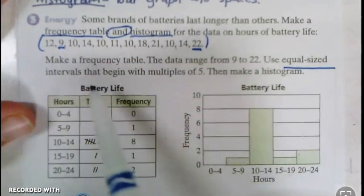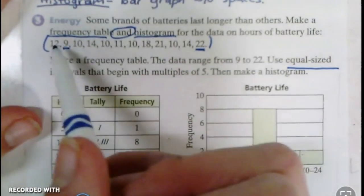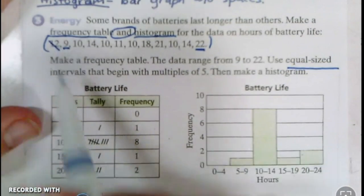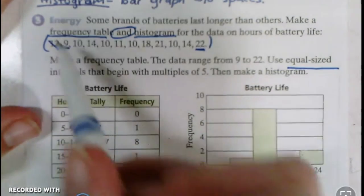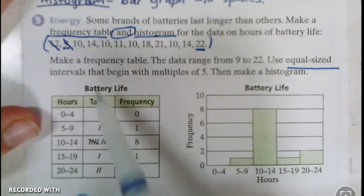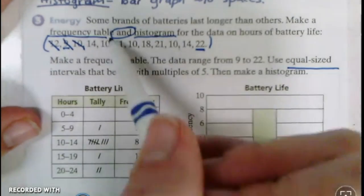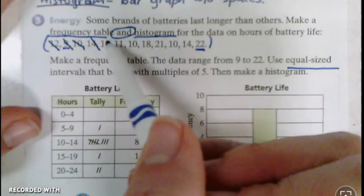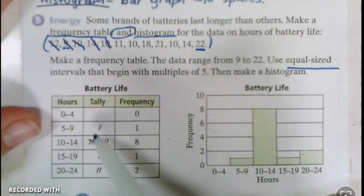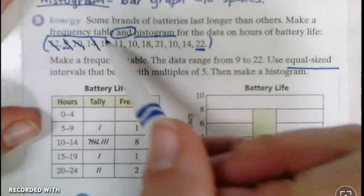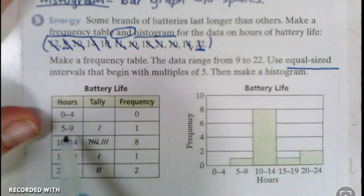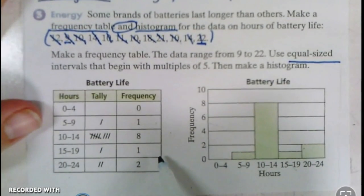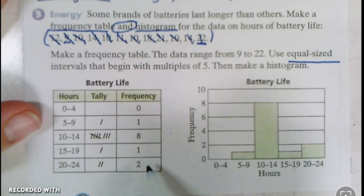Now I'm going to look at my data and make a little tally mark every time I see one. So 12, where will 12 fall in here? In between 10 and 14. So I make a little mark. What about 9? Right here. What about 10? Right here. What about 14? Right here. And I just make my little tallies. When I'm all done and I've marked all of these off and tallied them up, then I'll write the frequency, which is how many times the tallies occurred. So I've got one tally here, eight tallies, one tally, two tallies.